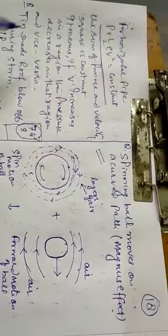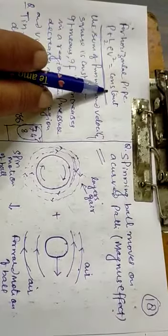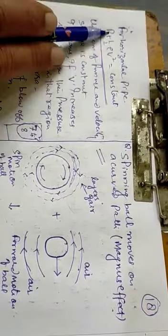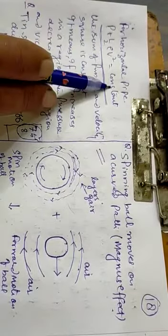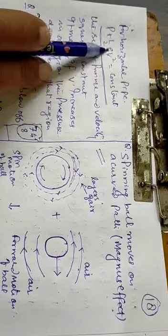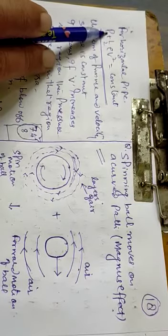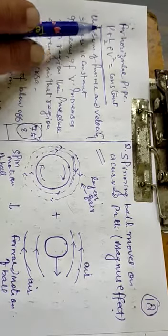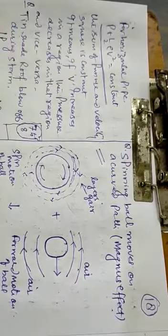In the last lecture, I told you that P plus half rho v squared is equal to constant. The sum of pressure and velocity is constant. If the velocity increases, the pressure will decrease. And if it decreases, it will increase. I have written it too.